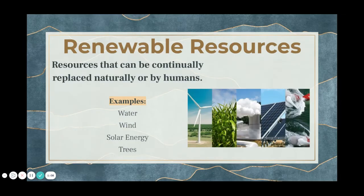There are also renewable resources. These are resources that can continually be replaced naturally or by humans — within our lifetime we can see them be replaced. Water, for example, is an abundant resource. When we use it, it evaporates and eventually comes back as precipitation. Wind, solar energy, and trees are also renewable. Even if you cut down a tree to use the lumber, it can grow back within our lifetime.